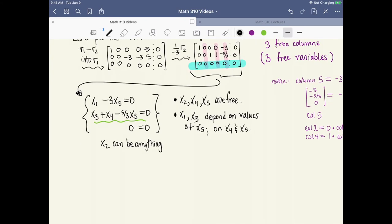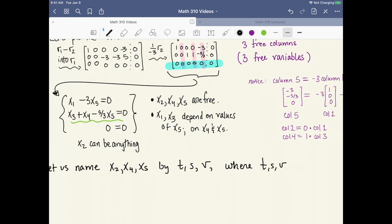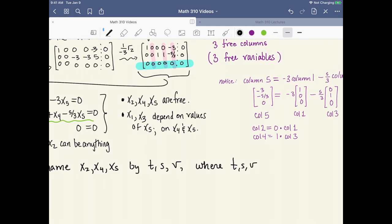So let us name x2 and x4 and x5 by t, s, and v, where t, s, and v stand for any real number there in R.